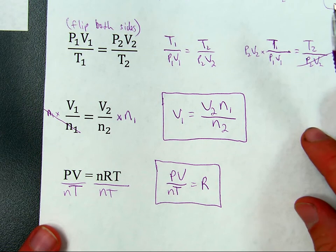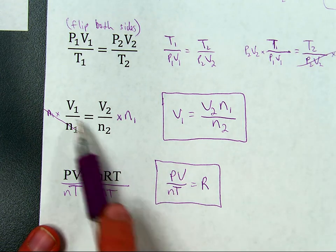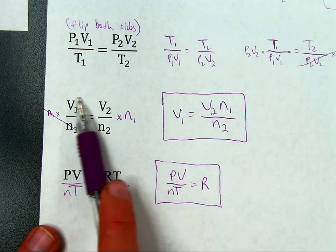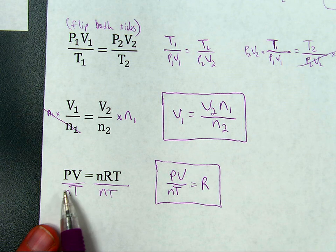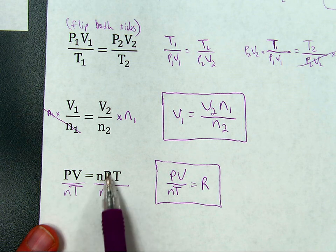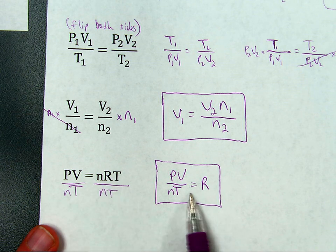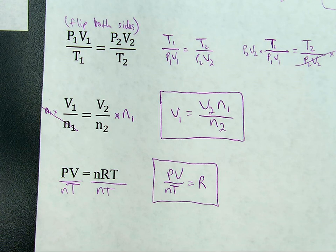And as for the other two, I multiplied both sides by N1 in order to get this by itself. And here I've divided both sides by N2 in order to get R by itself. All right, there we are.